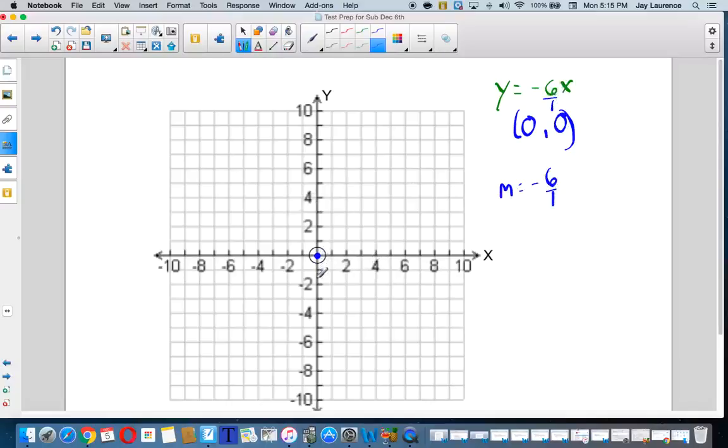So I'm going to go down 6, 1, 2, 3, 4, 5, 6, and over 1. And here I'm going to go 1, 2, 3, 4, 5, 6, and back 1. And there we go. All right. So my line is going to look like this. Better extend him so he's going through the points. And, of course, I will need to slap an arrowhead on there. All right. Doing real well.